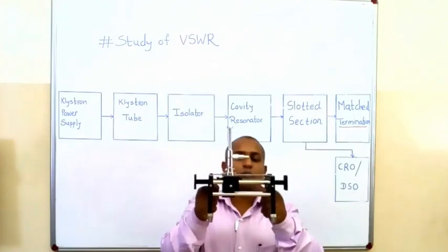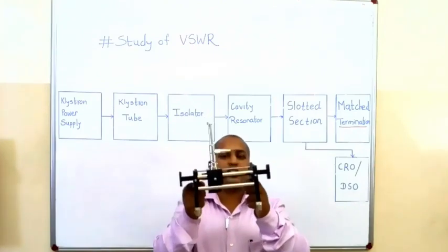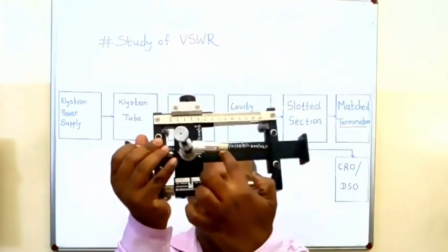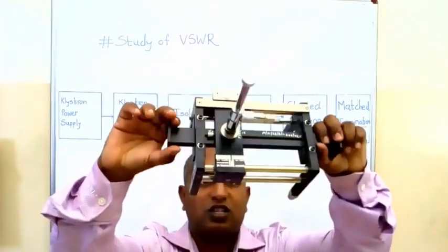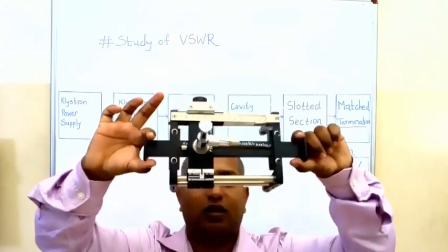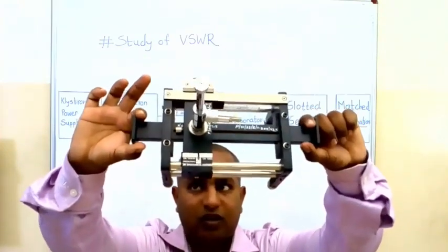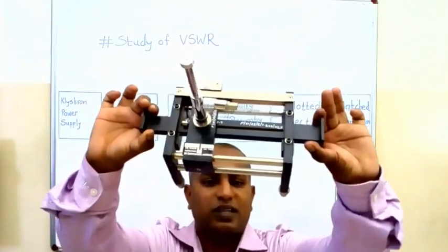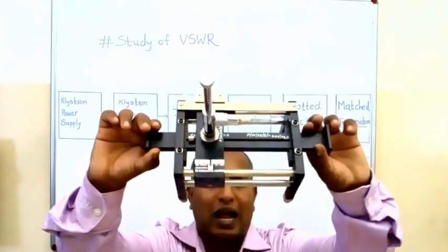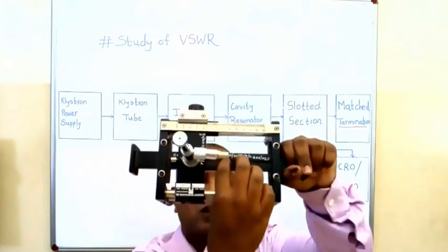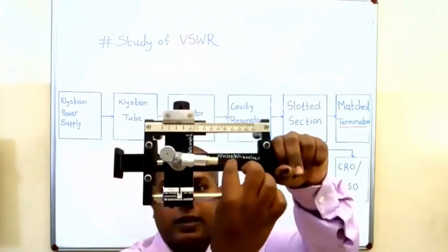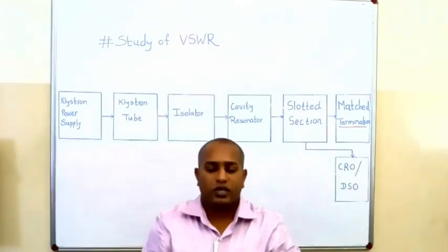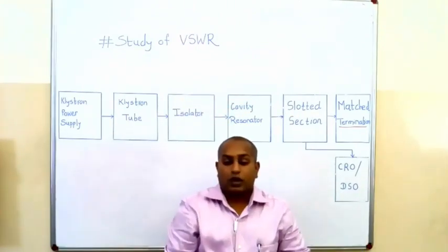The question comes to mind: why is it known as a slotted line section? Look carefully at this waveguide. These two terminal ends are my waveguide — the right-hand side is port 1 and the left-hand side is port 2. A slot is present inside the waveguide, and that is why it is known as a slotted line section.